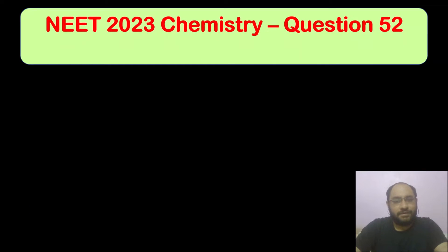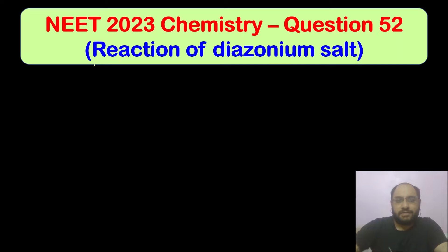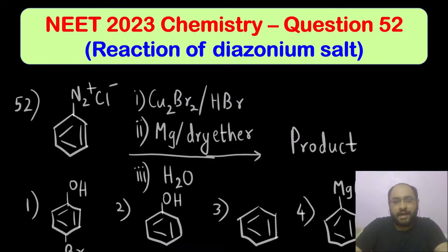Hello everyone, welcome to Chemazon Complete Chemistry. In today's video we are going to solve question 52 of the NEET 2023 from the chemistry section. This is based on the reaction of diazonium salt, that is benzene diazonium chloride.